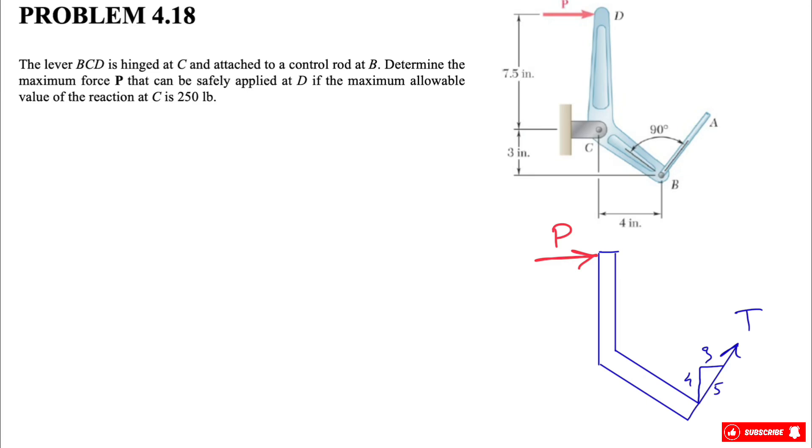Okay, welcome back guys. We have another question from chapter 4, solving the previous question before this one. We have this lever BCD that is hinged at point C and is attached to a control rod B, which we know is perpendicular to the CB part of the lever. This time we need to find the maximum force P that can be safely applied at point D in order to have the maximum value of reaction C at 250 pounds.